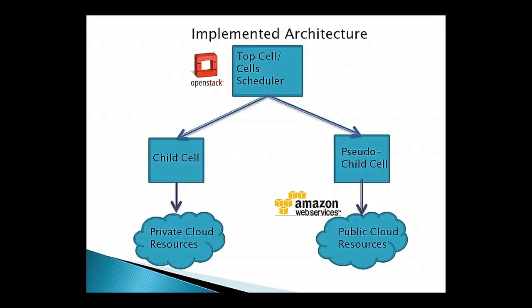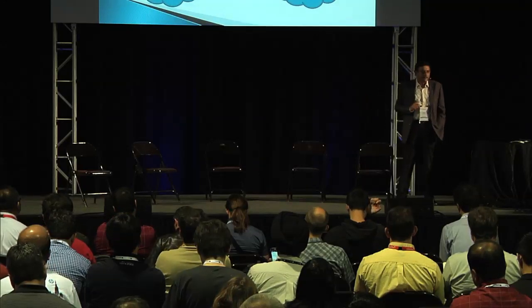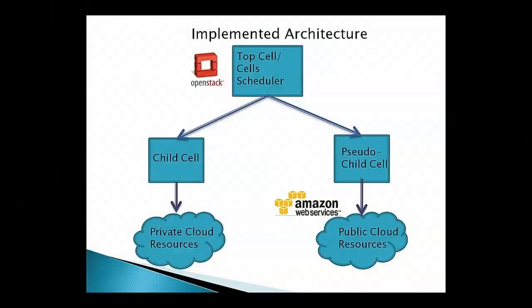In a normal OpenStack cloud, suppose you have four data centers and you make each one of them a cell. You'll have a top cell and four child cells underneath. What we have done is create a new kind of cell called a pseudo-cell. Any foreign cloud like Amazon gets mapped into a pseudo-cell. And since the cell architecture is general and hierarchical, within Amazon you can also have a hierarchical mapping if you wish.